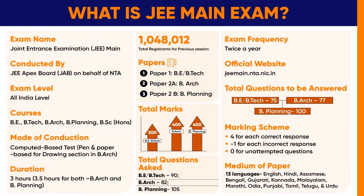The exam is conducted in 13 languages. Candidates have to answer 75 questions out of 90 in B.E. or B.Tech. Candidates have to answer 77 questions out of 82 in B.Architecture. In B.Planning, candidates will have to answer 100 questions out of 105. Each question in the JEE Main question paper carries four marks with a negative marking of minus one.